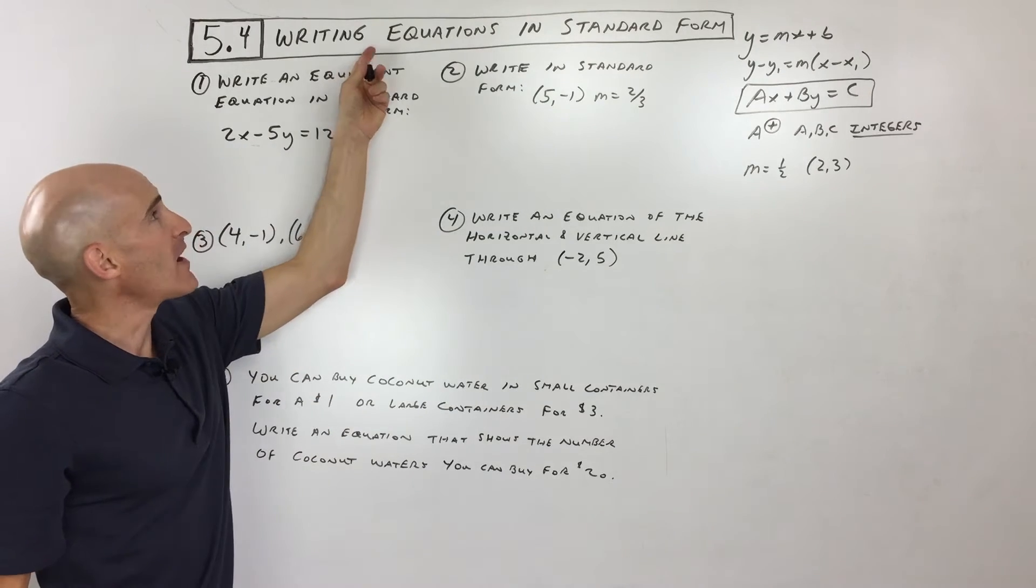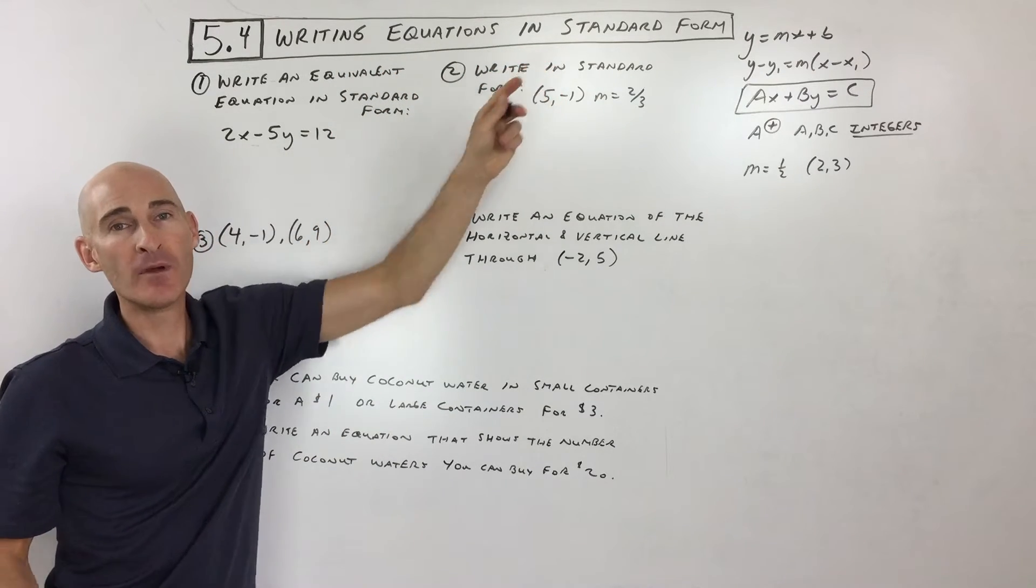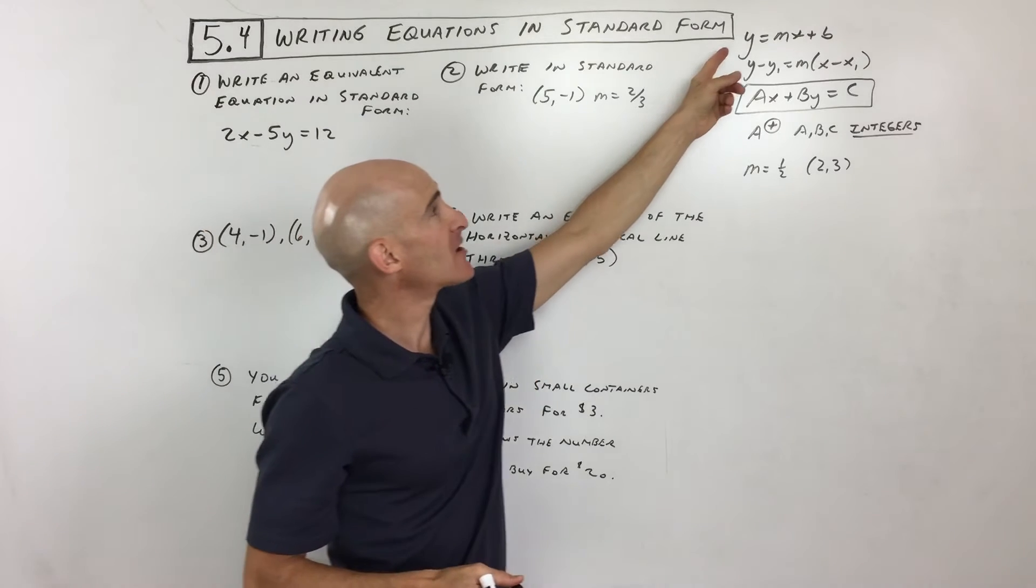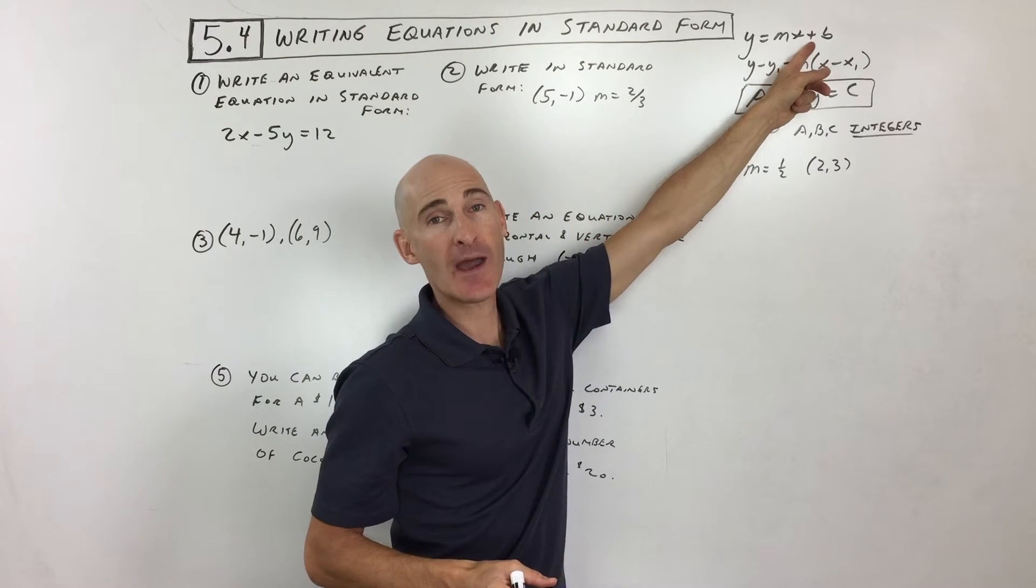Okay, 5.4, we're going to talk about writing equations in standard form. So just a quick review, we've talked about slope-intercept form, that's the y equals mx plus b.